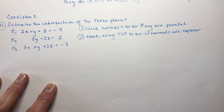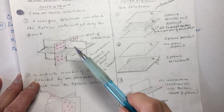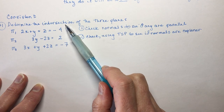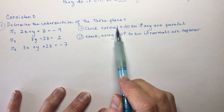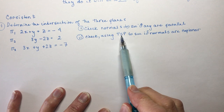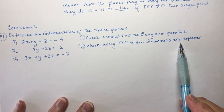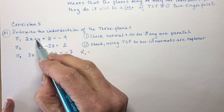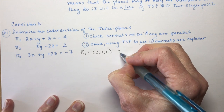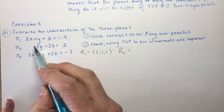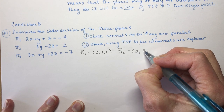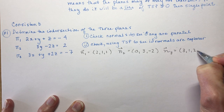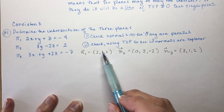Consistent number one: one point of intersection. We have three planes. The first thing you want to do is check the normals to see if they are parallel, then check using the TSP to see if the normals are coplanar. Normal one is (2, 1, 1), normal two is (0, 3, −2) — don't forget, if there's nothing there it has a zero — and normal three is (3, 1, 2). Taking a quick look, there's no chance these are scalar multiples of one another.